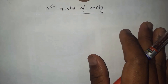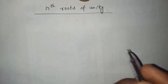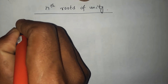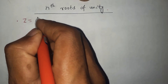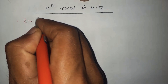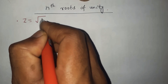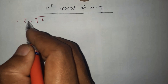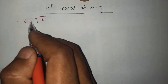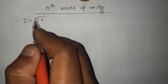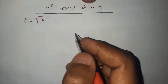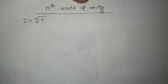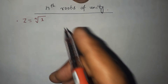Let's discuss about the nth root of unity. We take a complex number Z as the nth root of unity, denoted as Z equals the nth root of unity — unity means 1. This is the notation for the nth root of unity. Let's calculate the possible values of the nth root of unity.